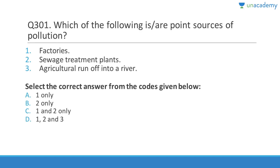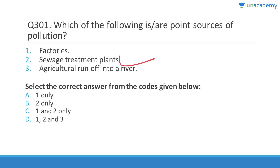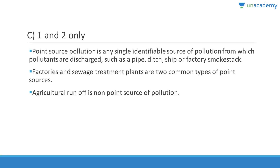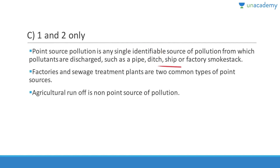Question 301: Point sources of pollution are identifiable single sources. Factories are a point source, sewage treatment plants are also a point source — both discharged through a pipe, ship, factory smokestack, etc. Agricultural runoff into rivers is a non-point source. Answer is C (1 and 2).